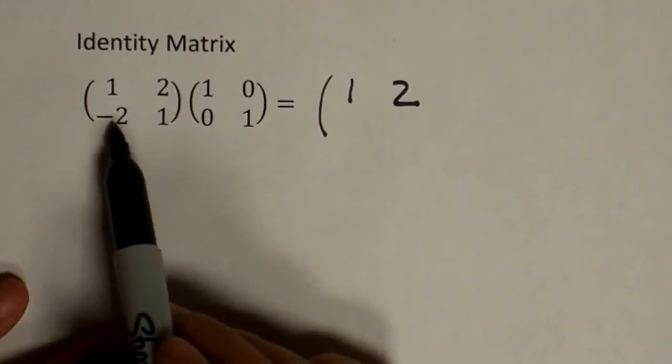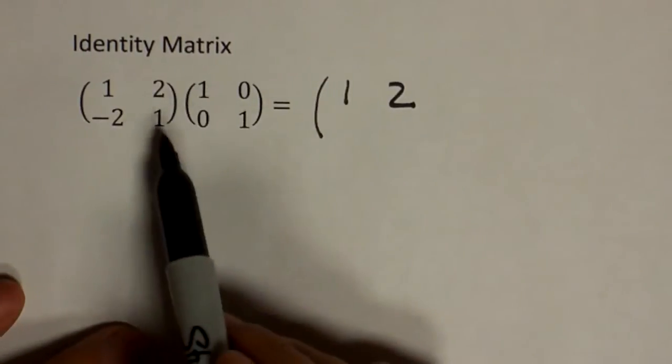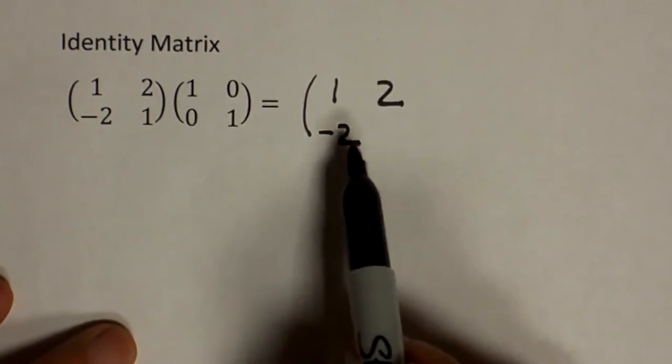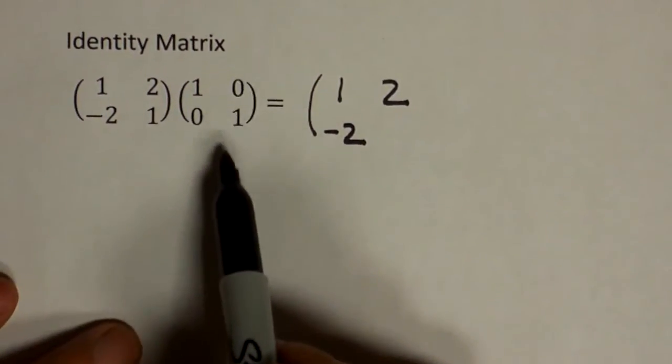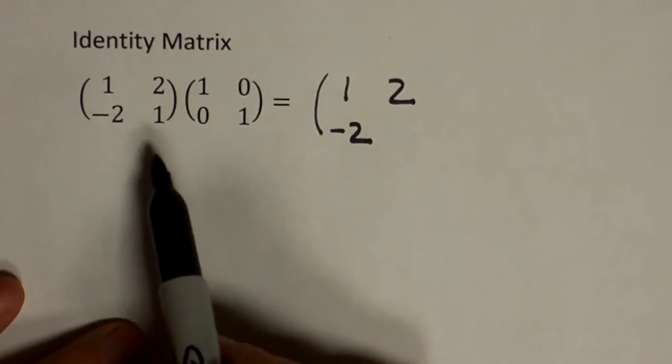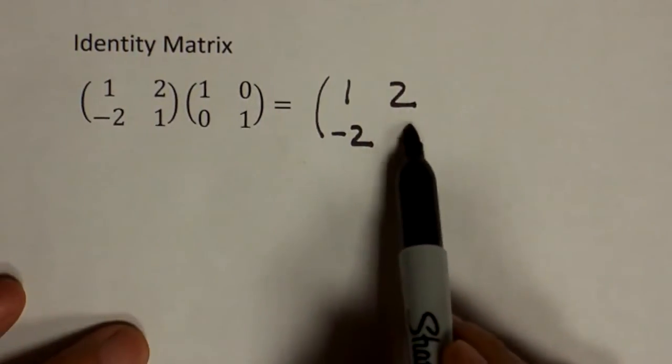Across, down. Negative two times one is negative two. And one times zero is nothing. So you get that. Across, down. Negative two times zero is nothing. One times one is one. So you have one.